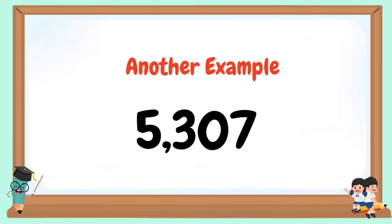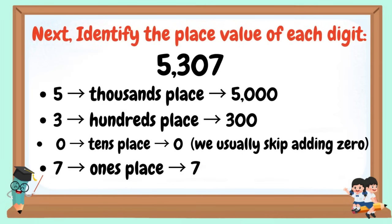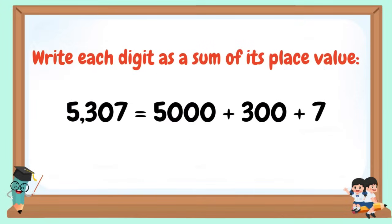Another example: 5,307. Identify the place value of each digit: 5 is in the thousands place (5,000); 3 is in the hundreds place (300); 0 is in the tens place — we usually skip adding 0; and 7 is in the ones place (7). So 5,307 in expanded form is 5,000 + 300 + 7.